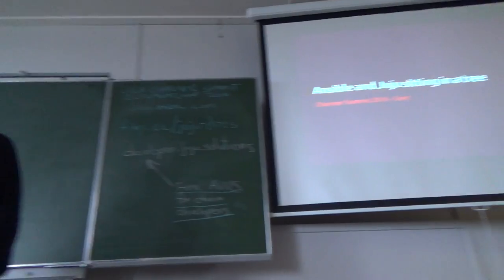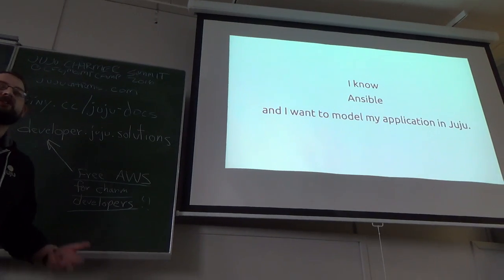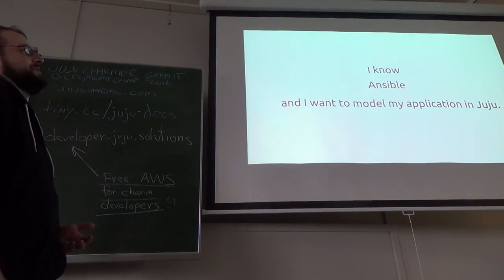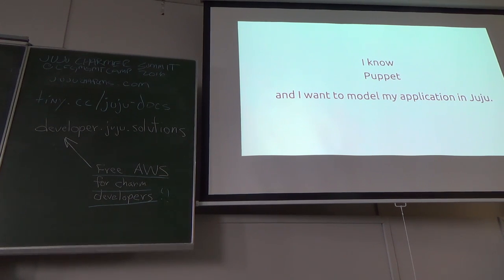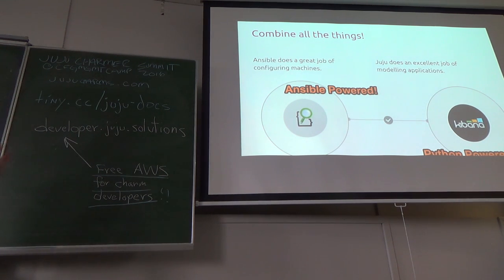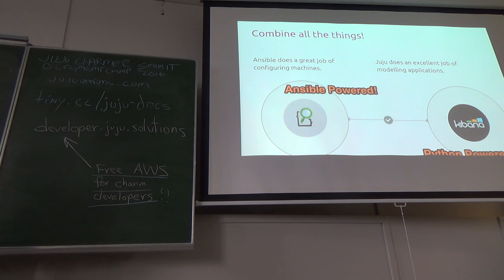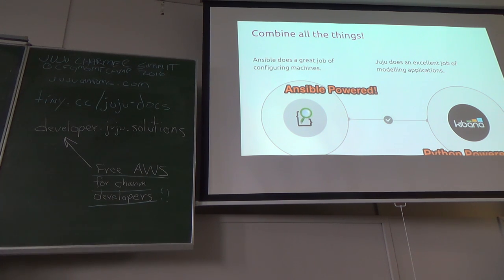Hi everybody. As he alluded, I am Charles Butler, aka Lazy Power on Twitter. Today we're going to be talking about Ansible and Juju sitting in a tree. What's interesting about this concept is that it expands beyond just looking at Ansible as a configuration management toolkit — these principles will apply to any configuration manager, whether it's Puppet, Chef, Bash, or Python. Ansible does a great job of configuring machines, and Juju does an excellent job of modeling them, so they can work together.